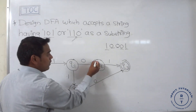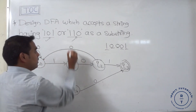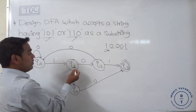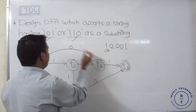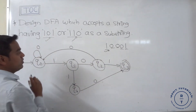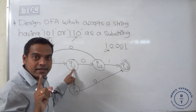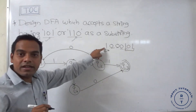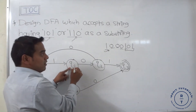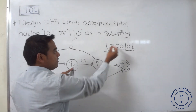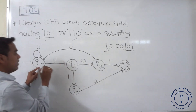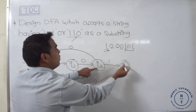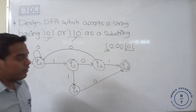The correct transition is: when 0 occurs at Q2, draw the transition from Q2 to Q0. Tracing the same string: 1 goes to Q1, 0 goes to Q2, 0 goes to Q0, 0 remains at Q0, 1 goes to Q1 — and it can't reach the final state. Then for a valid string containing 101 as a substring, the trace correctly reaches Q3. So this transition from Q2 to Q0 on input 0 is correct.